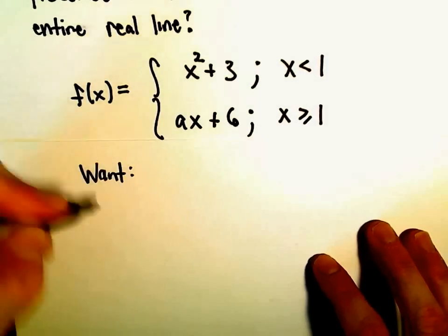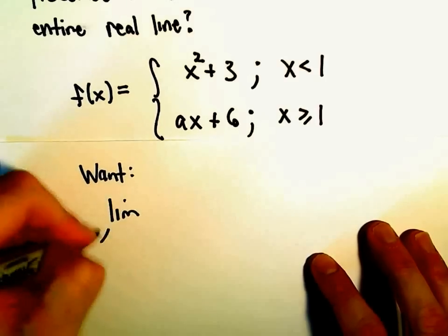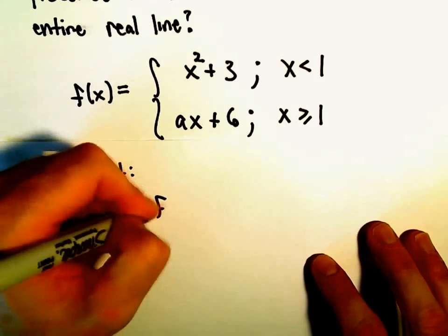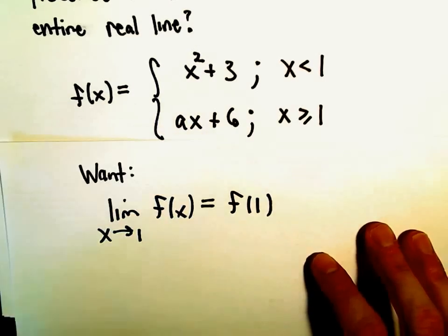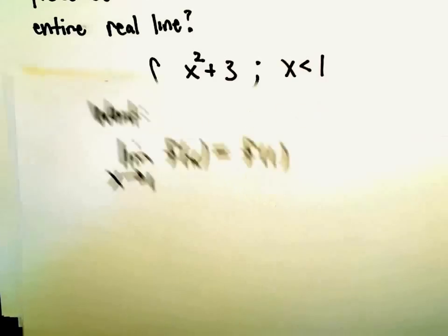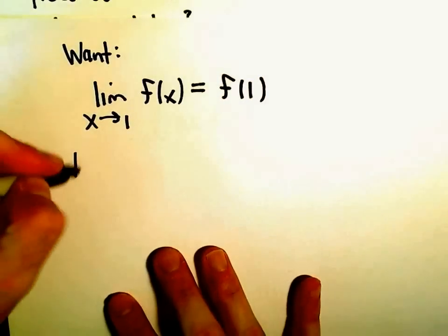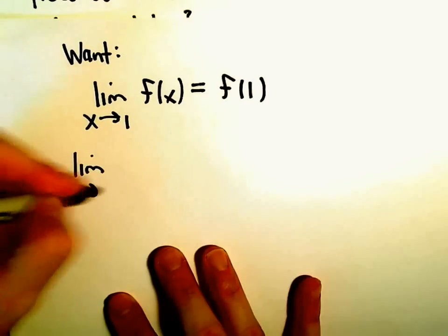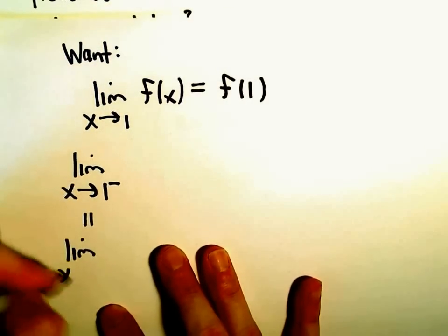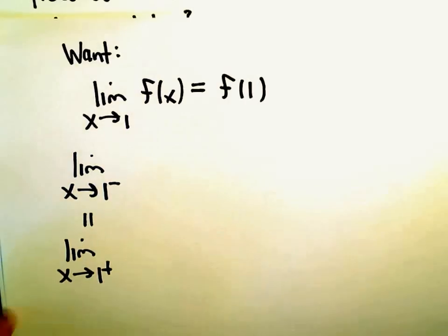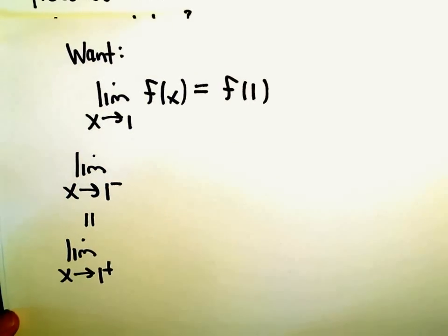So we're going to use our definition. What we want to occur is we want the limit as x approaches 1 of the function, we want that to equal f of 1. Well, for the limit to exist, the limit as x approaches 1 from the left, that's going to have to equal the limit as x approaches 1 from the right.